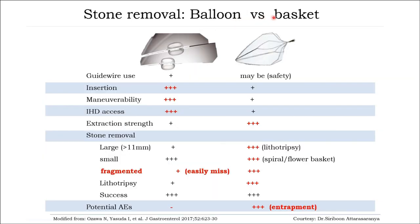Comparing balloon and basket for stone removal less than 10 to 12 mm diameter: the balloon is better in terms of insertion, mobility, and for small stones that are not fragmented, with no risk of entrapment. The basket may be better for stone extraction and can use lithotripsy in cases of stones bigger than 11 to 12 mm.